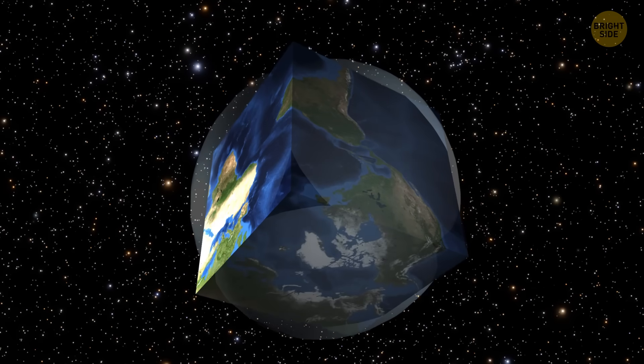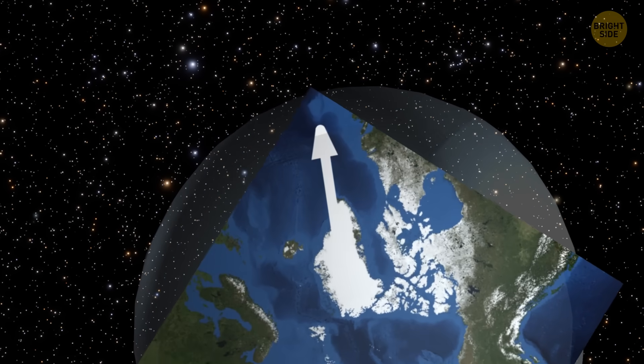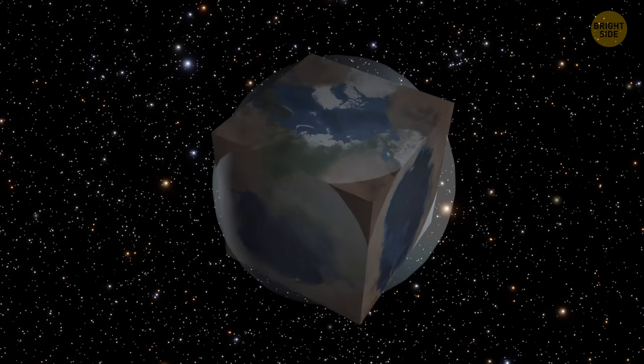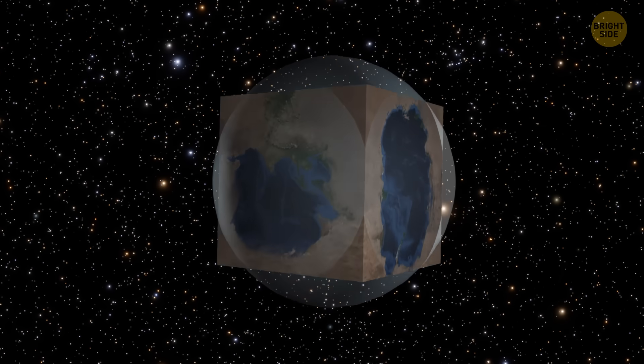If you found yourself on the edges of the cube Earth, you'd find no lush and vibrant landscapes. All the water would pool at the center of each face, leaving the edges rocky and barren.